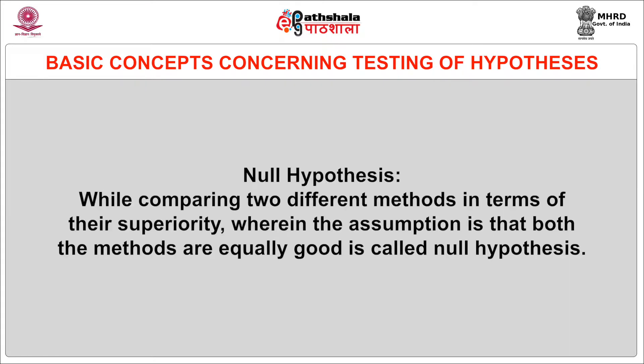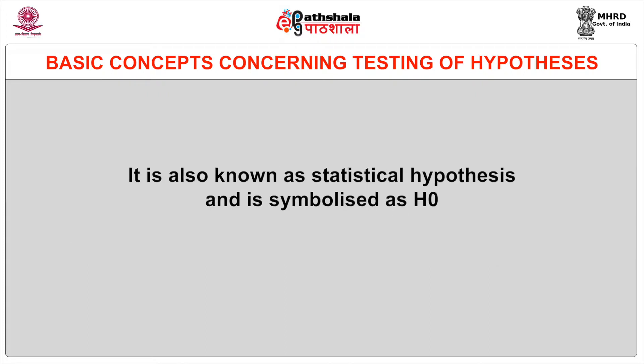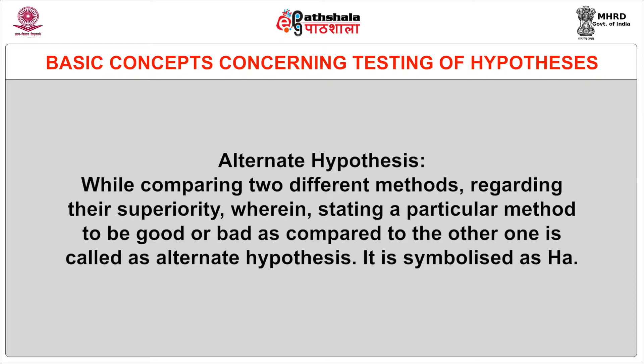Let us take a summarized view of both hypotheses. The null hypothesis — while comparing two different methods in terms of their superiority, wherein the assumption is that both methods are equally good — is also known as the statistical hypothesis and is symbolized as H₀. The alternate hypothesis — while comparing two different methods regarding their superiority, wherein a particular method is stated to be good or bad compared to the other — is symbolized as Hₐ. It is important to frame the null hypothesis and the alternative hypothesis before the sample is drawn.